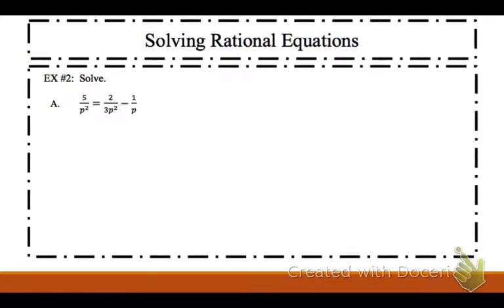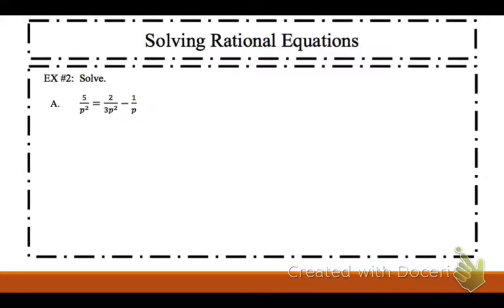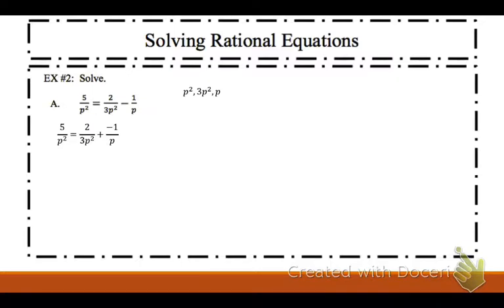Let's do one more. There's a subtraction sign, so always distribute that subtraction sign first. Now I need to find my least common denominator. I have p squared, 3p squared, and p. P squared goes into 3p squared, and p goes into 3p squared. So 3p squared is my least common denominator. The restriction: 3p squared cannot equal 0, which means p cannot equal 0.